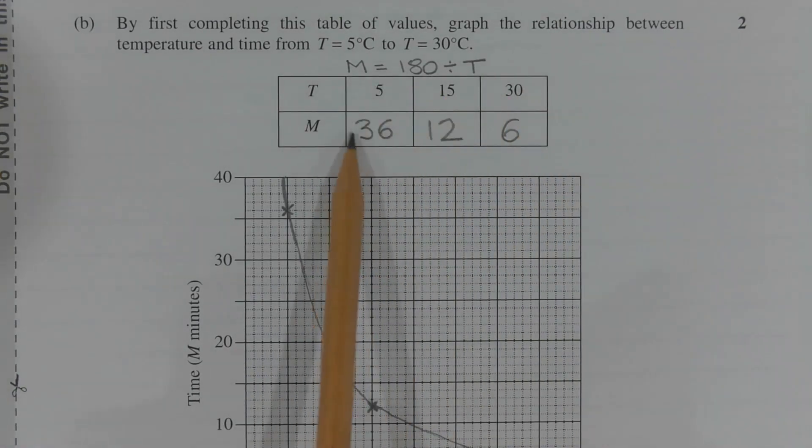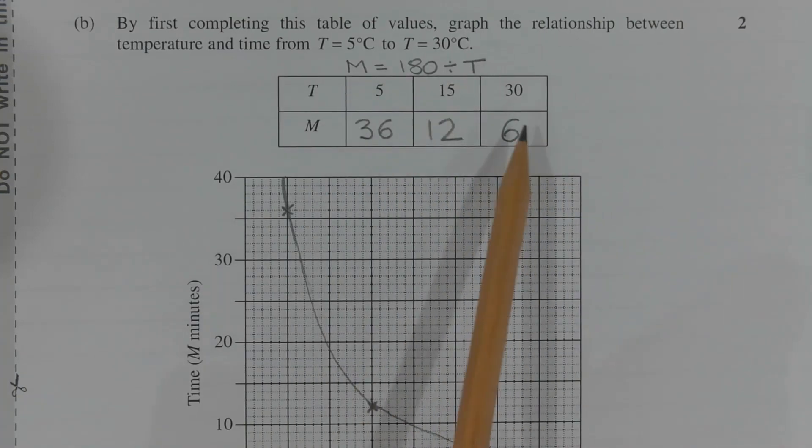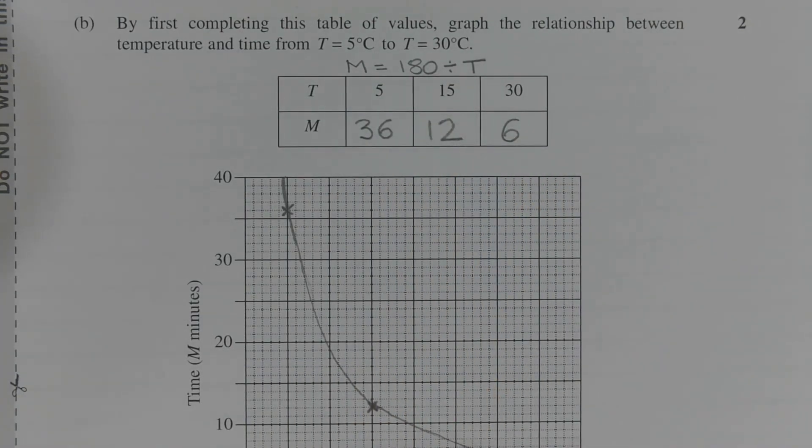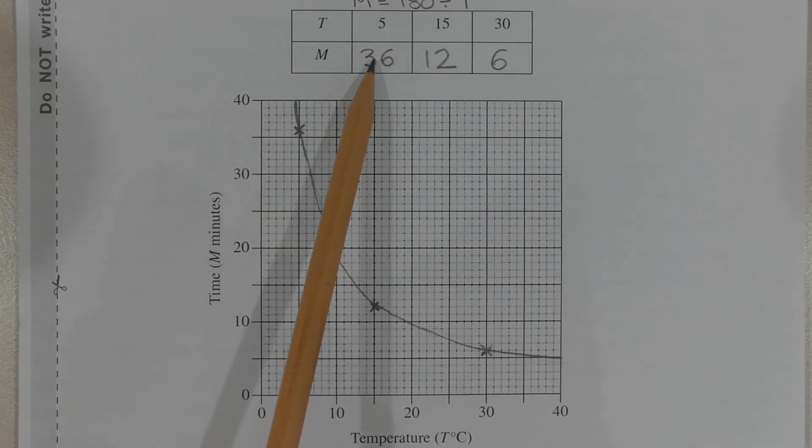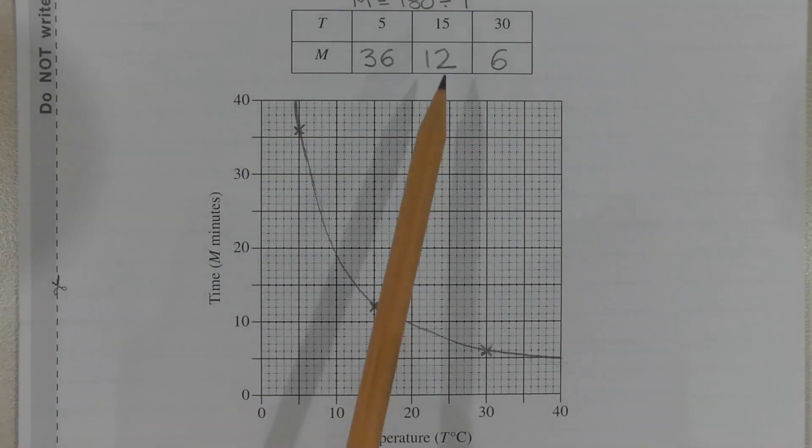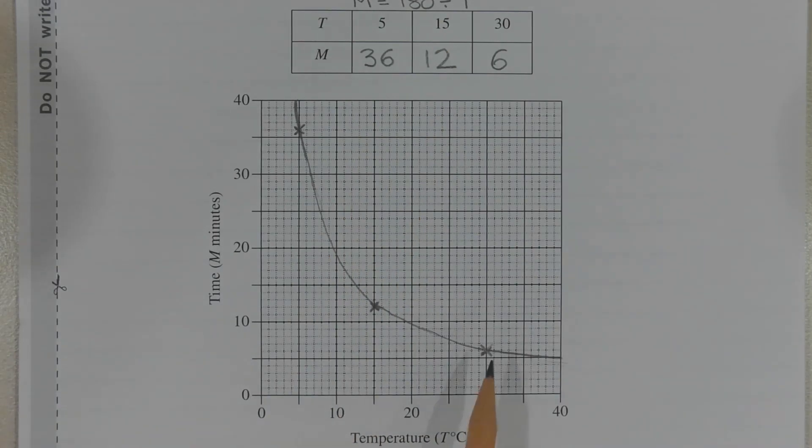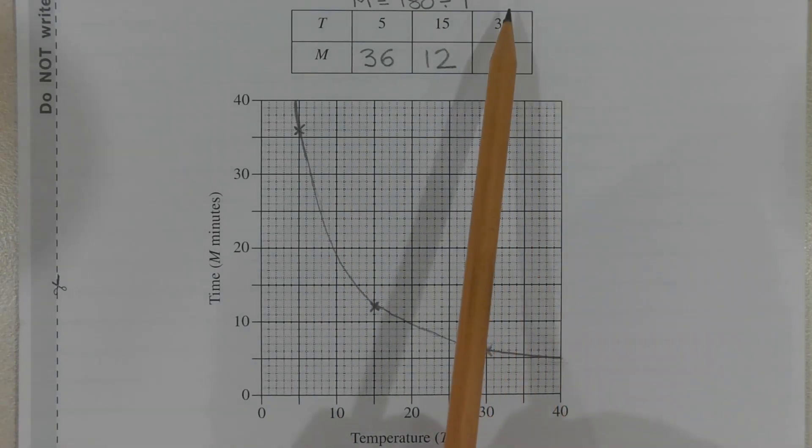These three columns form coordinate pairs which can be plotted on the graph below. This point here has coordinates 5, 36. This point has coordinates 15, 12. And this point has coordinates 30, 6.